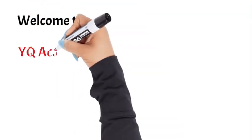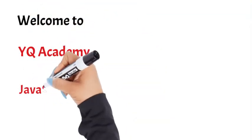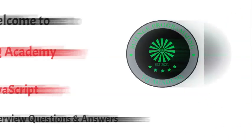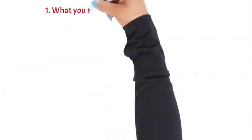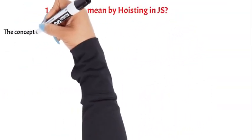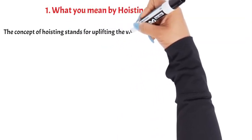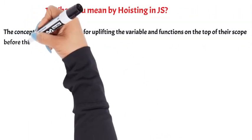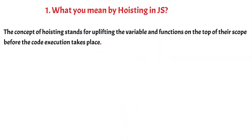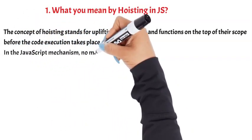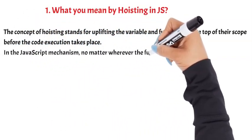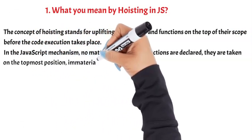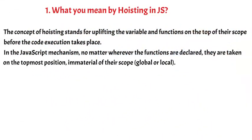Welcome to YQ Academy JavaScript Interview Questions and Answers. Question 1: What do you mean by hoisting in JS? The concept of hoisting stands for uplifting the variables and functions to the top of their scope before code execution takes place. In the JavaScript mechanism, no matter wherever the functions are declared, they are taken to the topmost position, immaterial of their scope — global or local.